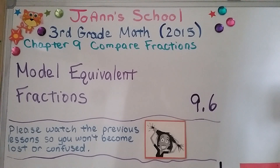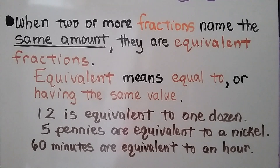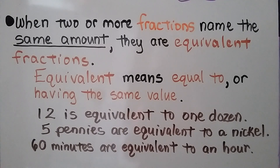Third grade math lesson 9.6. We're going to model equivalent fractions. When two or more fractions name the same amount, they're equivalent fractions. Equivalent means equal to or having the same value. Twelve is equivalent to one dozen. Five pennies are equivalent to a nickel. And sixty minutes are equivalent to an hour. They represent the same amount.